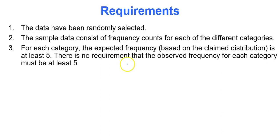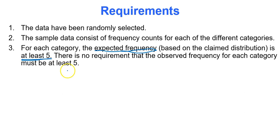The requirements for this test are that the data have been randomly selected, the sample data consists of frequency counts for each of the different categories, and for each category the expected frequency — not the observed, but the expected frequency — has to be at least five. There is no requirement that the observed frequency has to be at least five, just the expected.